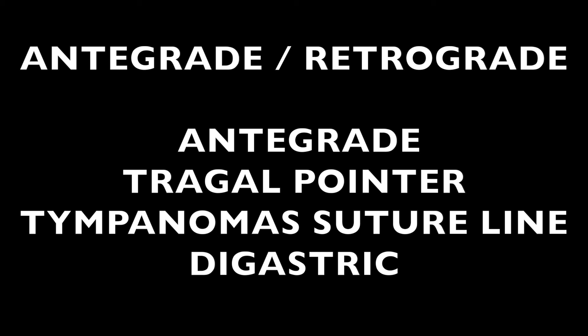Now we have two different techniques to do parotidectomy: the antegrade and the retrograde technique. The antegrade uses the tragal cartilage as a pointer, the temporomastoid suture line, and the posterior belly of digastric. Whereas we use the retrograde technique, identifying two important nerves — usually the buccal branch and the zygomatic branch. The buccal branch usually runs one finger breadth just above the lower border of the angle of the mandible, and that is what we identify early. The advantage of the retrograde technique is that we quickly identify the facial nerve.